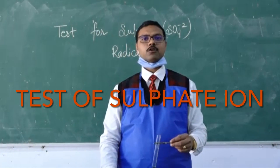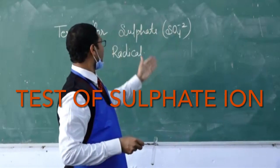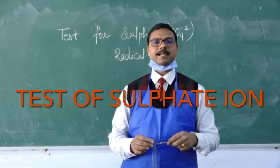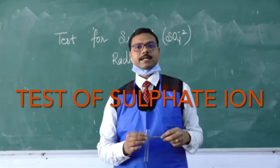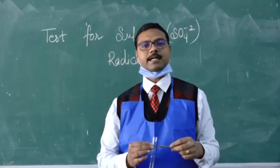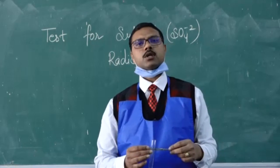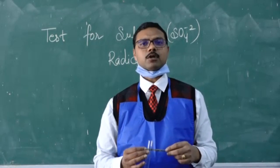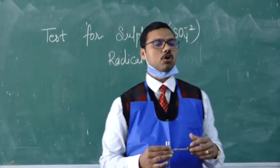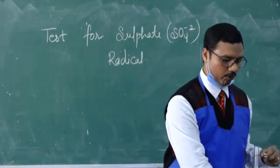Today we are going to perform how to identify sulfate radicals. Sulfate radical is a separating radical, so for identification of sulfate radicals you can use soda extract or you can use directly salt. This time we are going to use directly salt for the identification of sulfate radical. Just see how we perform it.